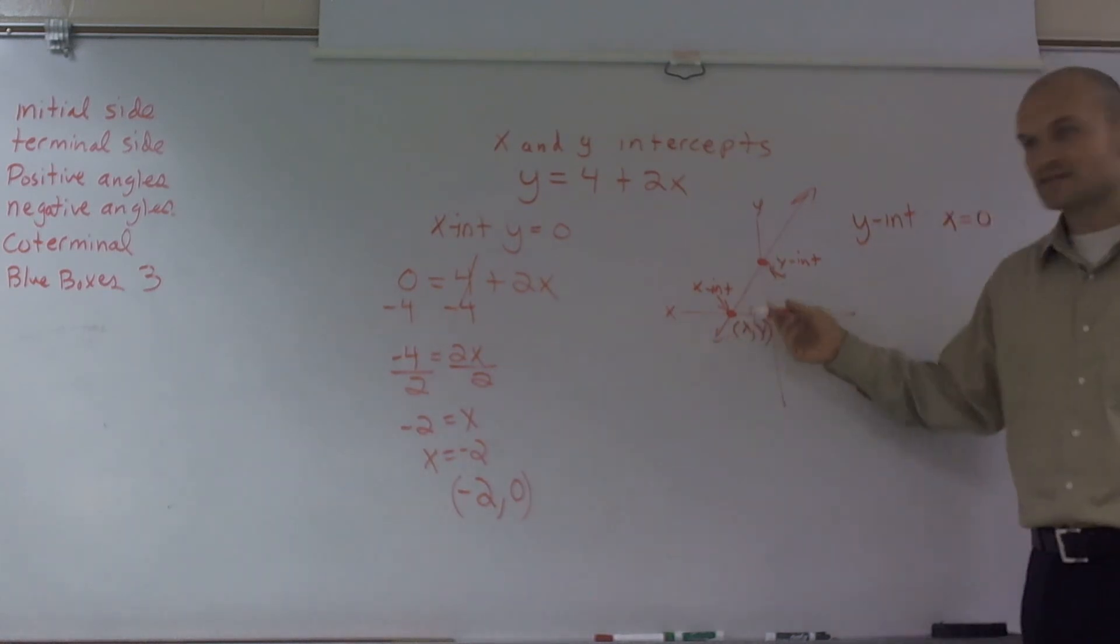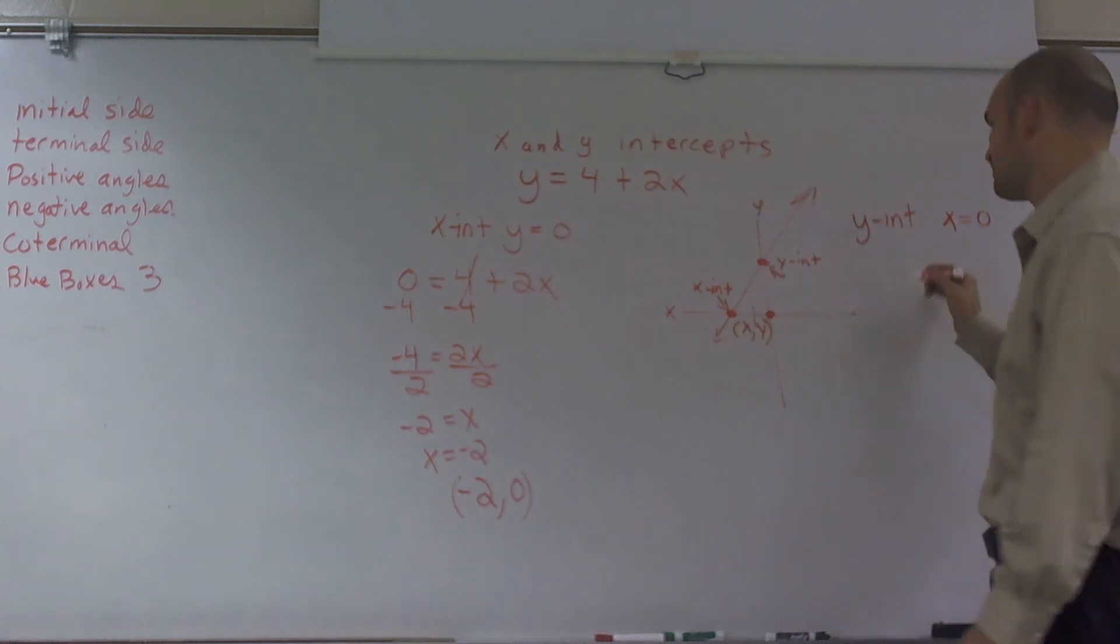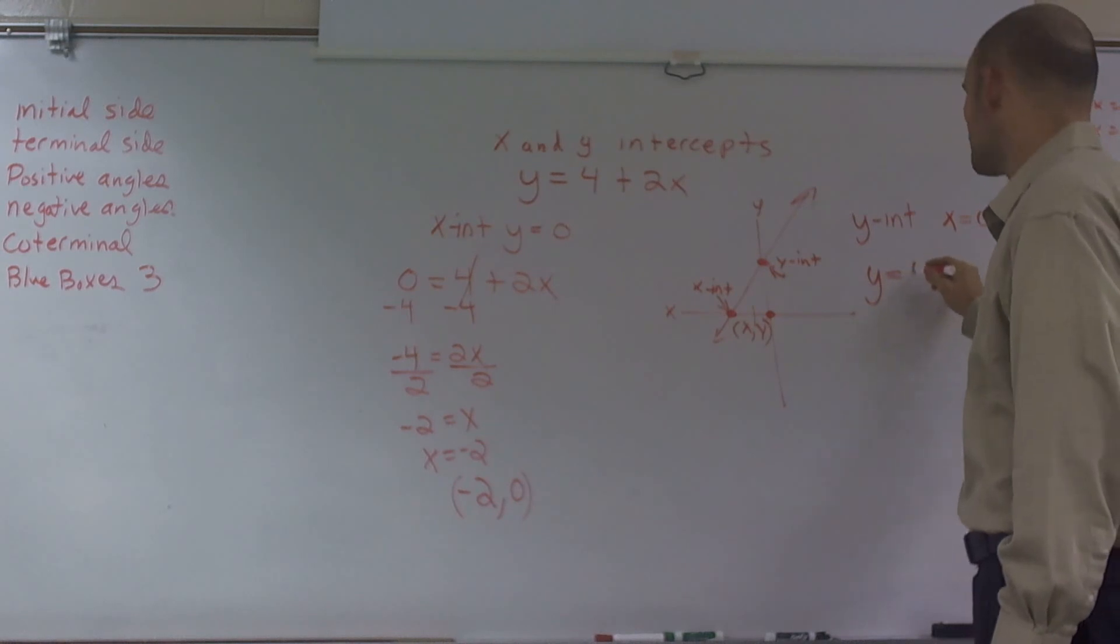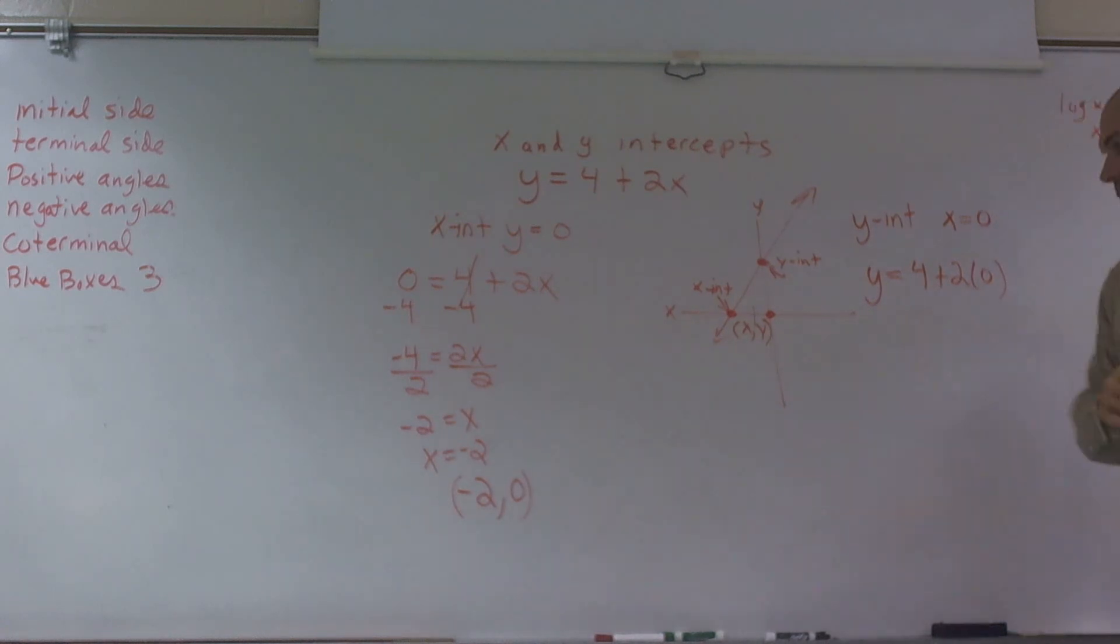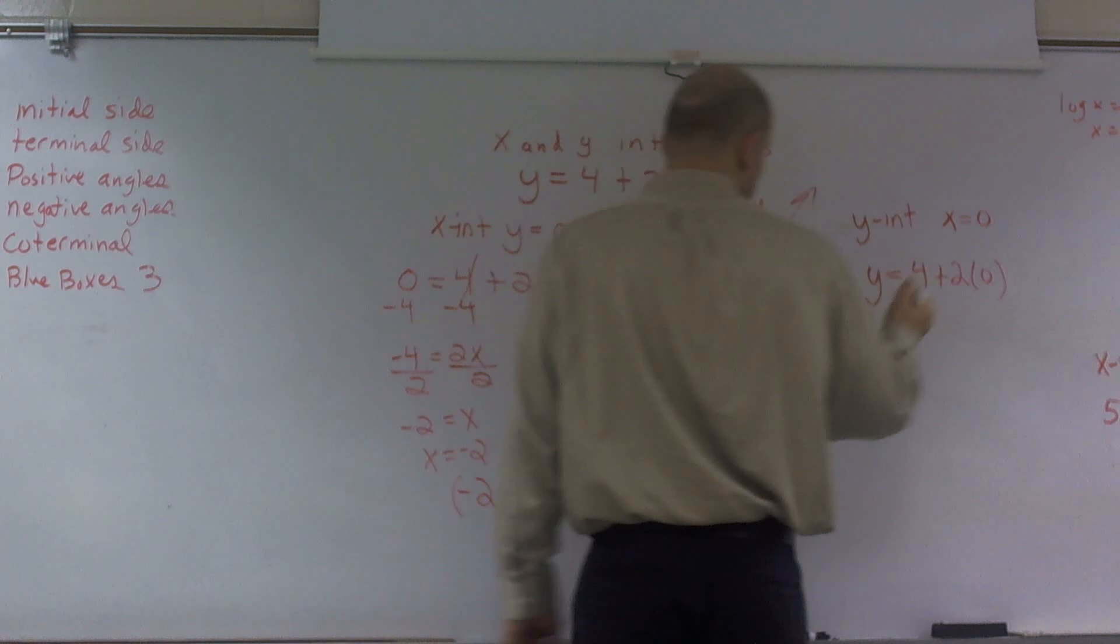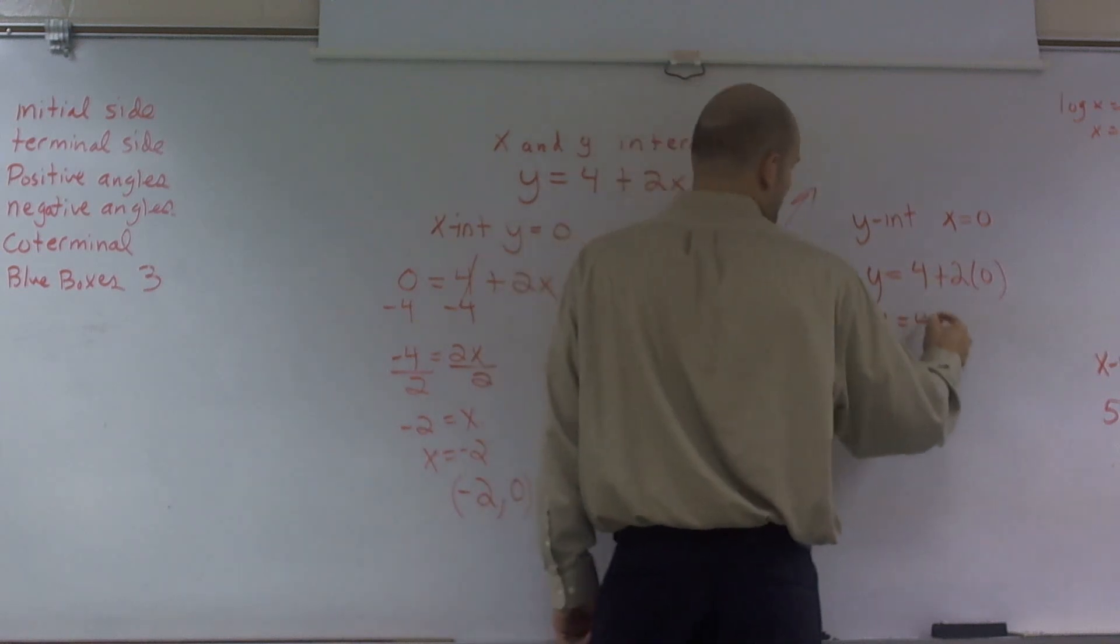So therefore, remember this is like a number line. Remember you start at 0 on the x-axis. I didn't go left or right, so x is still equal to 0. So now what I'm going to do is I'm going to plug in 0 for x. So y equals 4 plus 2 times 0. 2 times 0 is 0. y equals 4 plus 0. y equals 4.